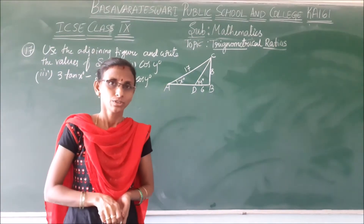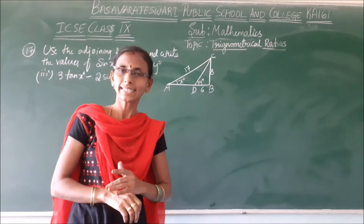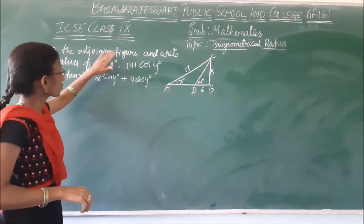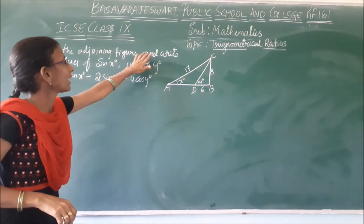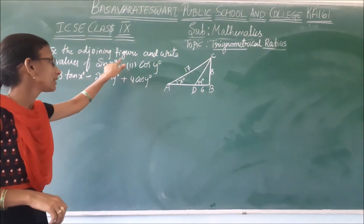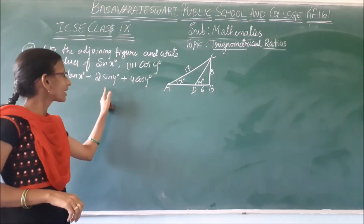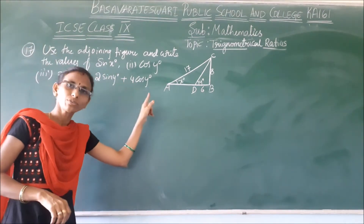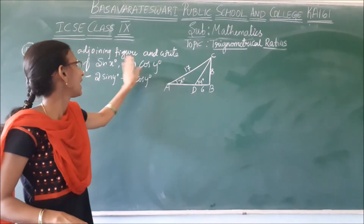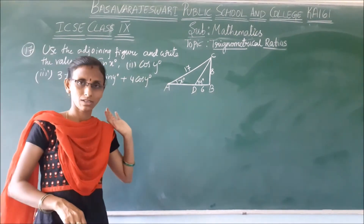Good morning all of you. So we were doing the trigonometric ratios. In that, our next problem is: use the adjoining figure and write the values of sin x, cos y, and 3 tan x minus 2 sin y plus 4 cos y.